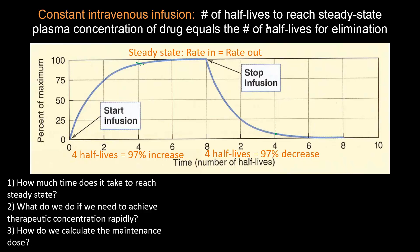The number of half-lives to reach the steady state plasma concentration equals the number of half-lives for elimination. So the first question is: how much time does it take to reach steady state? That's about four half-lives. If the half-life were four hours, you wouldn't achieve steady state until a total of 16 hours.